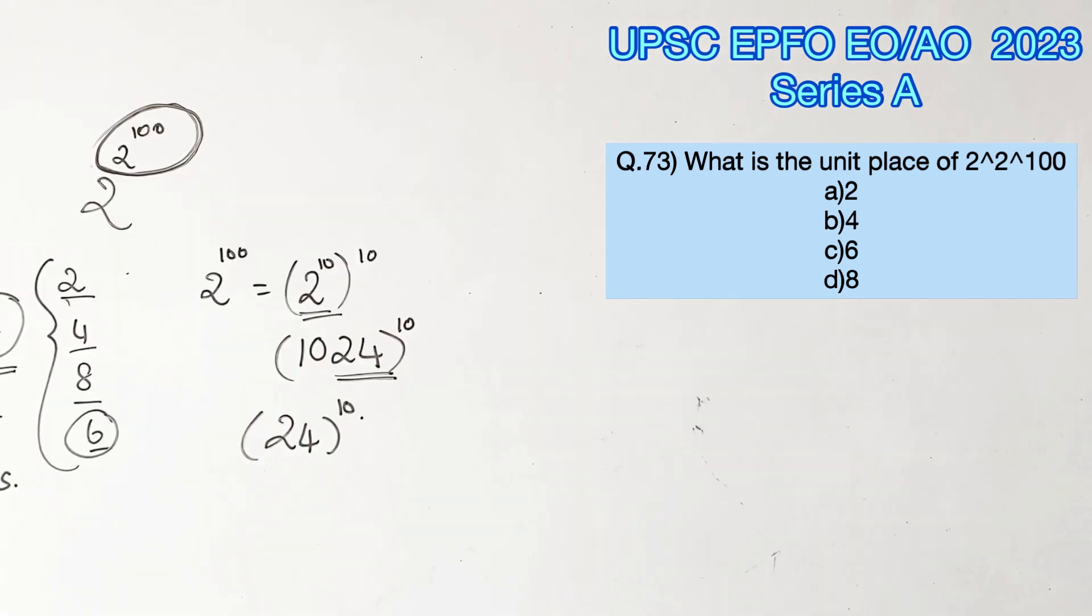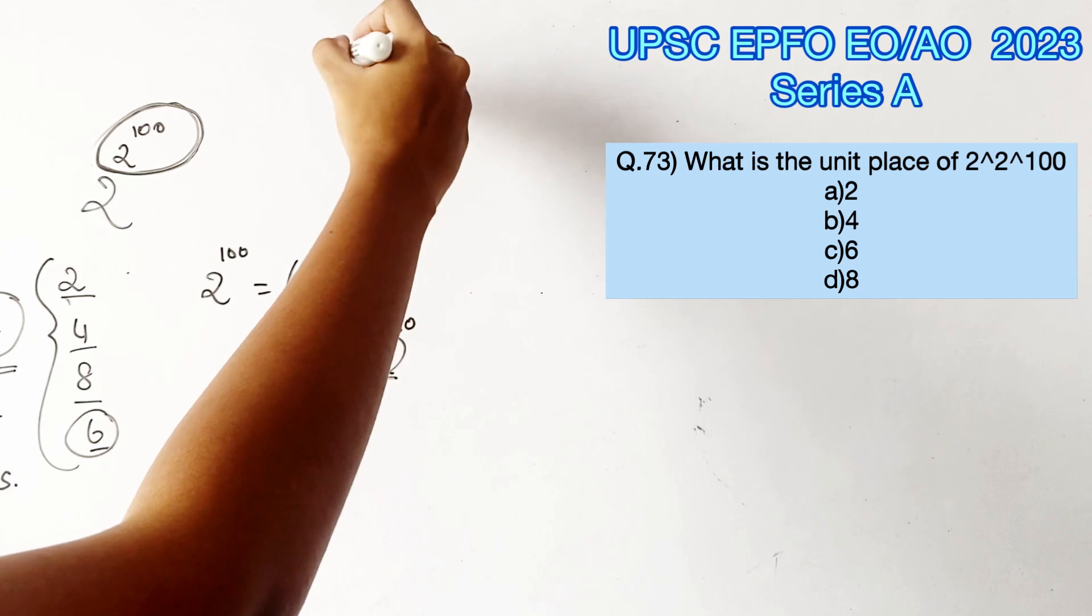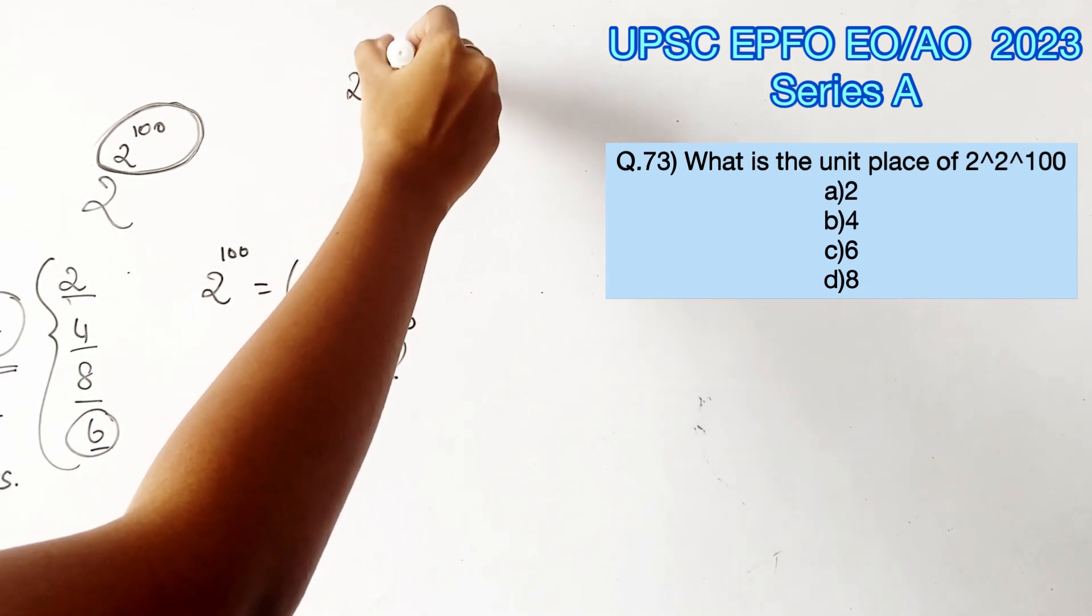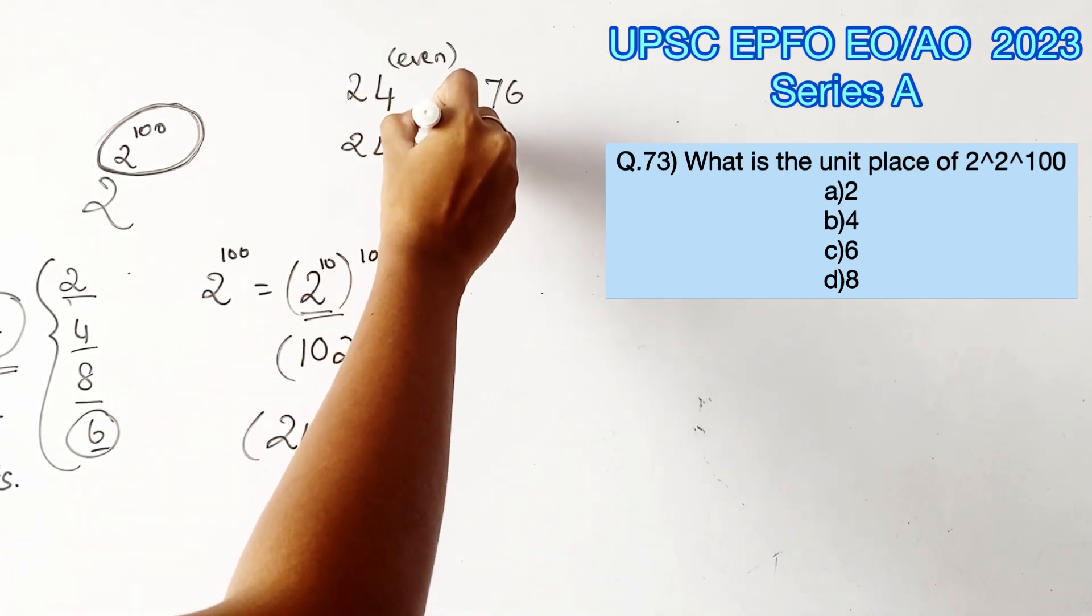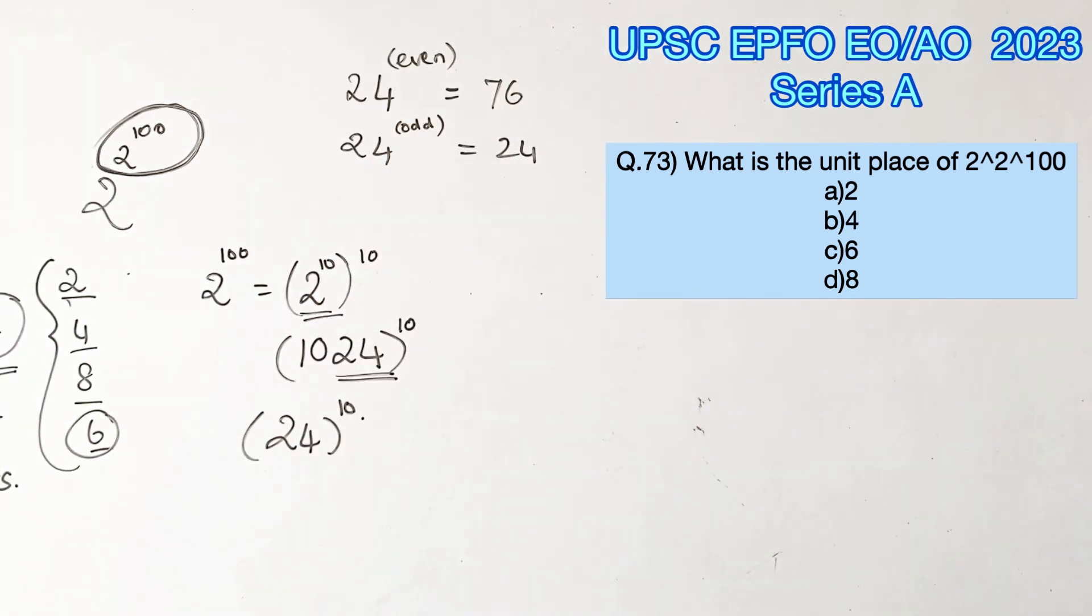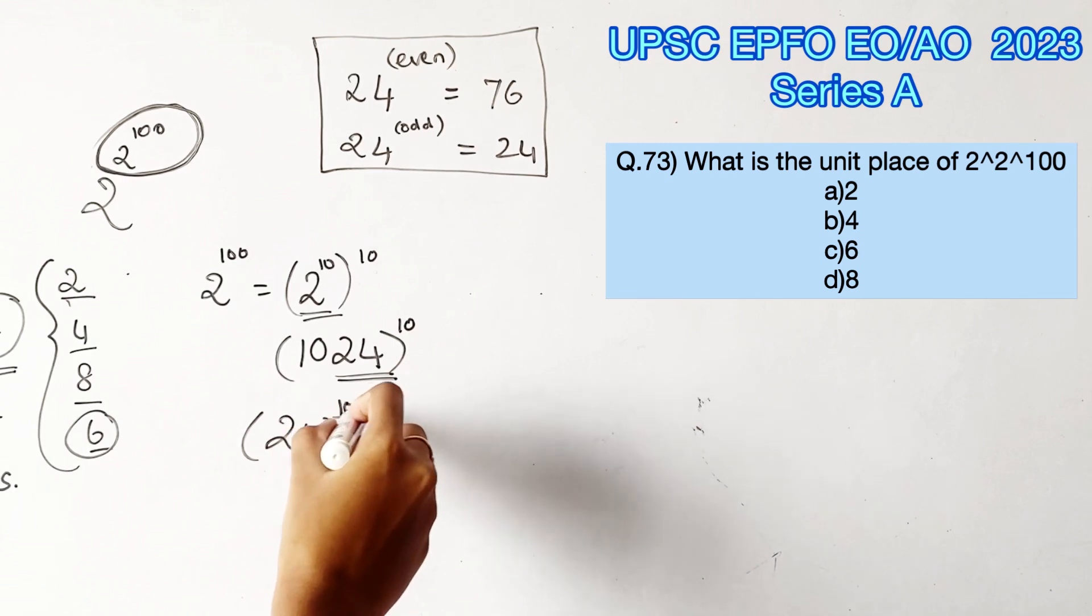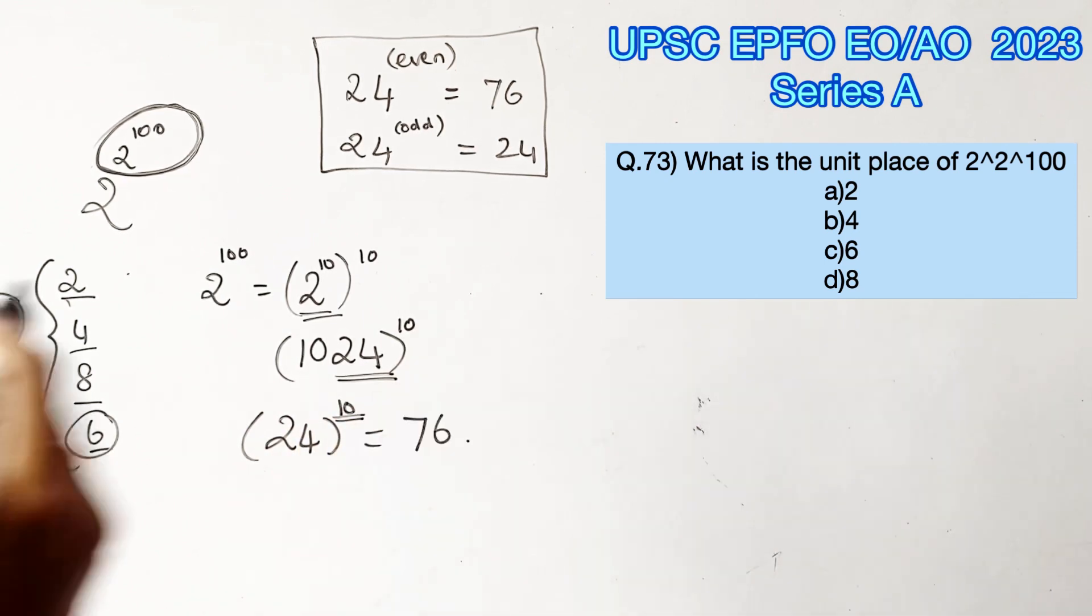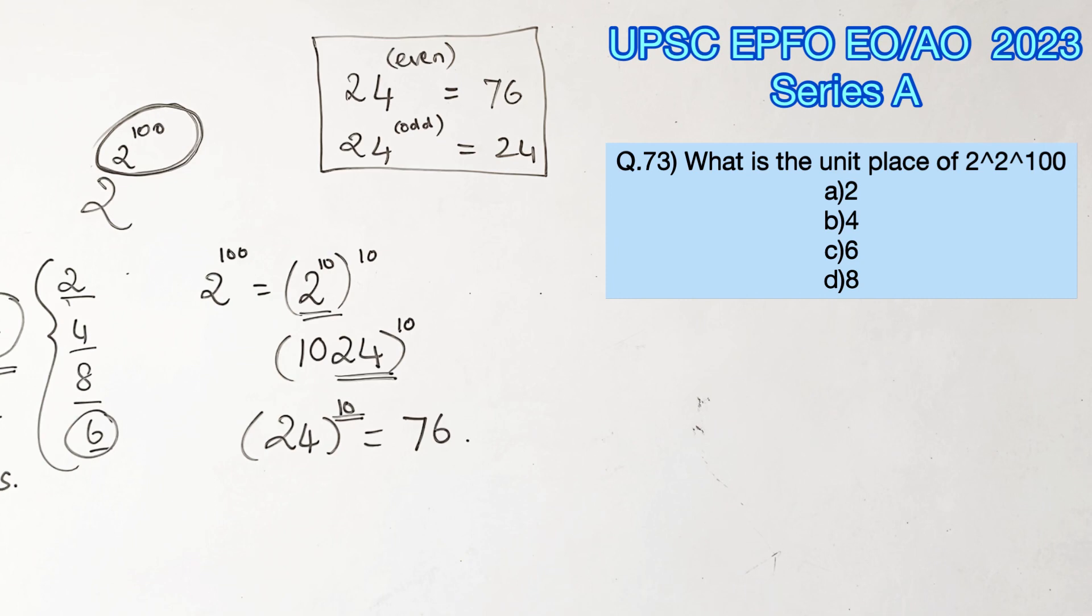Now there is an important proof to remember. 24 raised to the power of an even number would always give a value that ends with 76. 24 raised to the power of an odd number would always give a value that ends with 24. Now we got 24 power 10, which is an even number. Therefore, this number should end with 76.